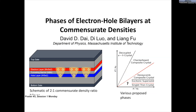I will discuss the phase diagram of the electron-hole bilayer at a two-to-one electron-hole density ratio, as realized in experiment by TMD heterostructures. Proposed strongly correlated phases include Wigner crystals of trions and an exciton condensate permeating through an electron Wigner crystal. I will also present preliminary results from a variational Monte Carlo study using a newly developed graph neural network wave function.